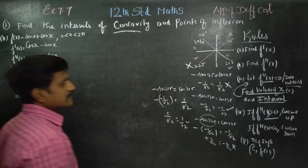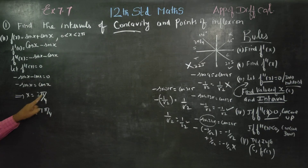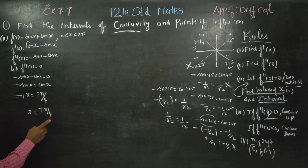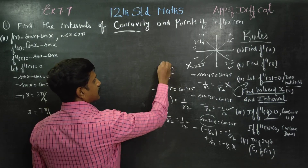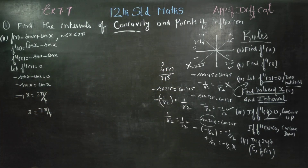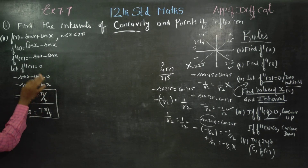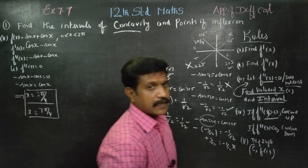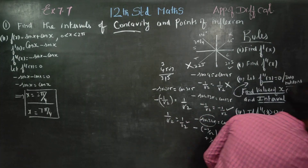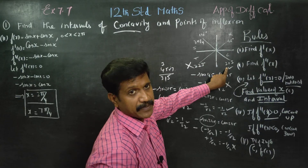315 degrees is 7 pi by 4, since 45 into 7 is 315. In the two angles where f double dash x is equal to 0, if you check using trigonometry, the angles that satisfy the condition are 3 pi by 4 and 7 pi by 4.